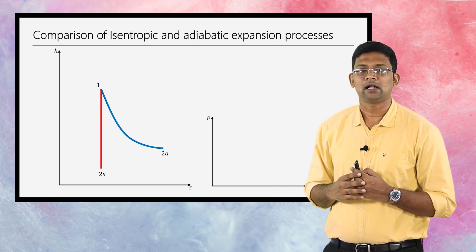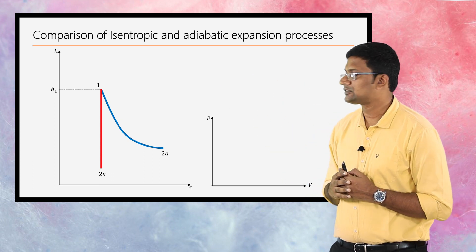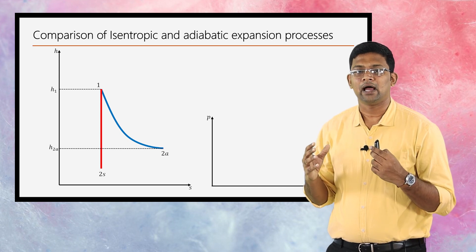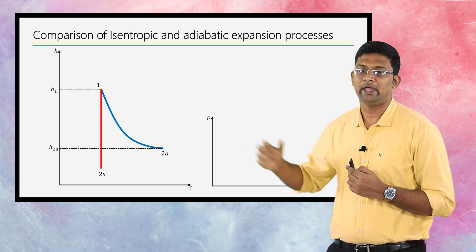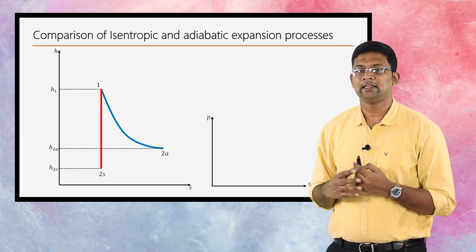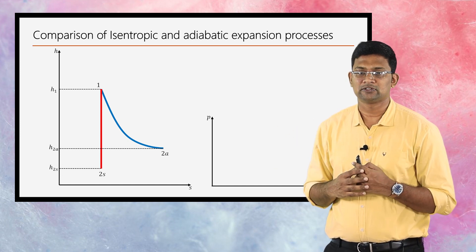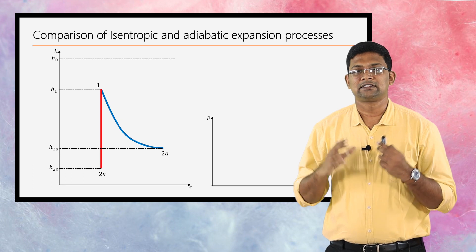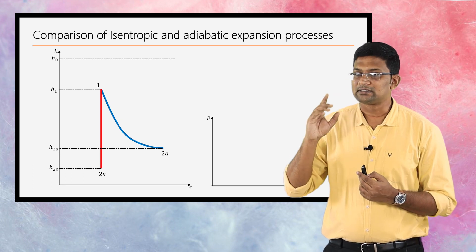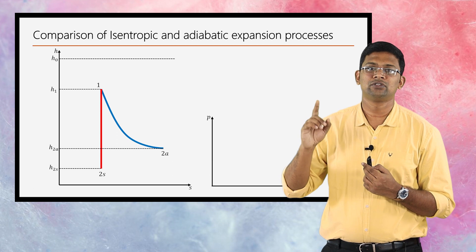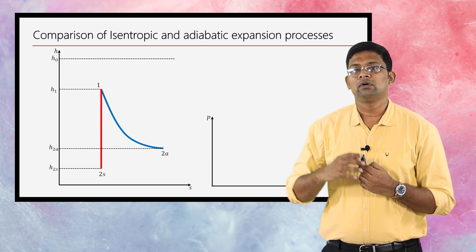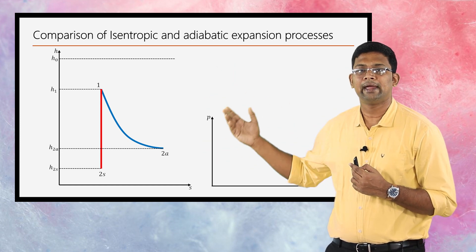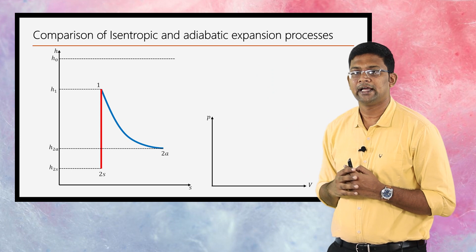Let us mark the values of enthalpies: h₁ represents the enthalpy at state point 1, h₂a represents the enthalpy at the end of the adiabatic process, and h₂s represents the enthalpy at the end of the isentropic process. h₀ represents the stagnation enthalpy, and we know its value is constant according to the steady flow energy equation.